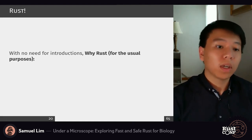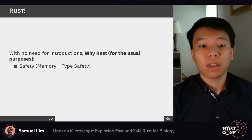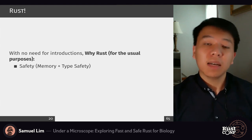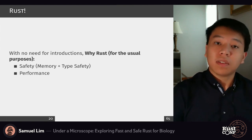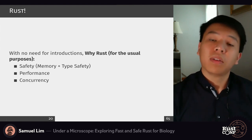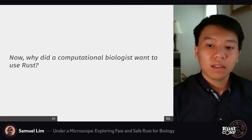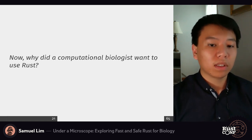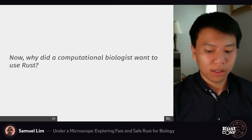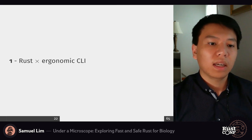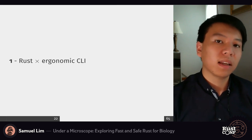With no need for further introduction: Rust is usually used for safety in the sense of both memory safety with the borrow checker and type safety within its entire type system. We look at performance at the level of systems programming, and we look at concurrency — both in its primitives and in the ecosystem surrounding them. But how would that apply to a biologist or computational biologist?